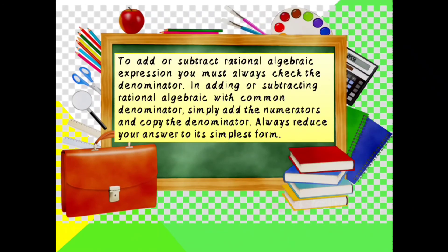To add or subtract rational algebraic expressions, you must always check the denominator. In adding or subtracting rational algebraic expressions with a common denominator, simply add the numerators and copy the denominator. Always reduce your answer to its simplest form.